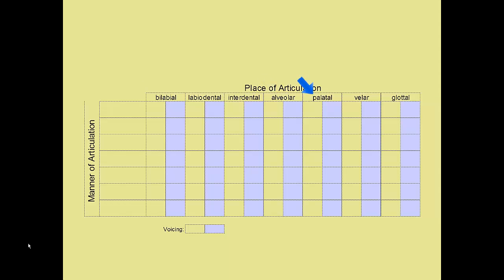Next is the palatal area. Then the velar area, which is the back portion of the roof of your mouth. Finally, the glottal area is where voicing occurs — right at the vocal folds.